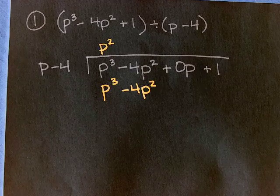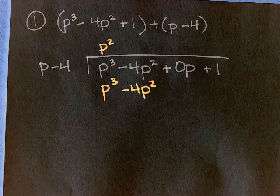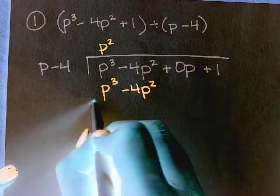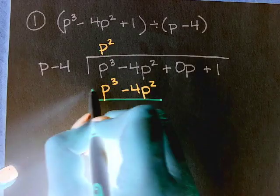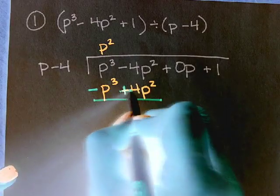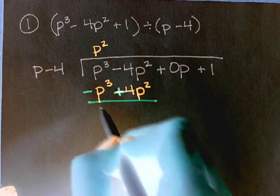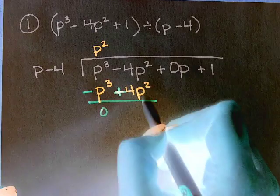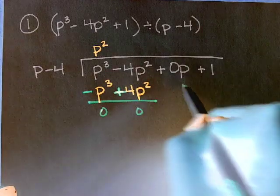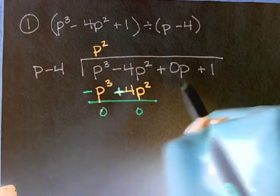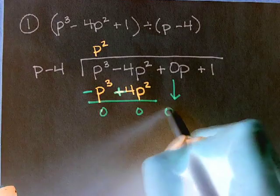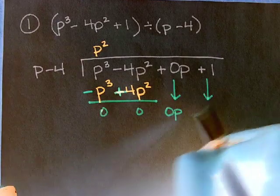Then what do we do? We draw the line, change the signs, because we're minusing. All right. And we minus these, we get zero. We add these together, we get zero. And then what do we do? We bring down the rest of it, zero P.